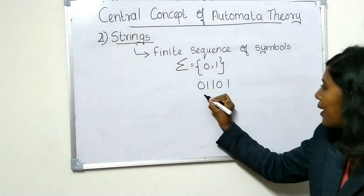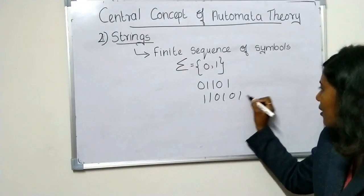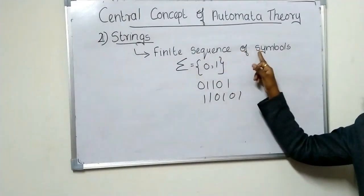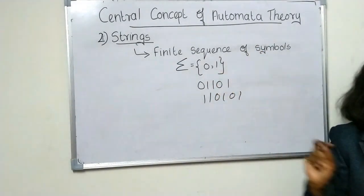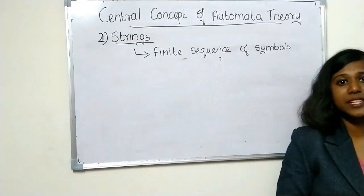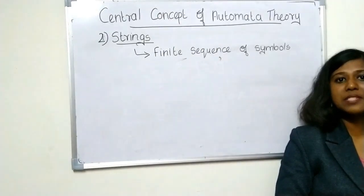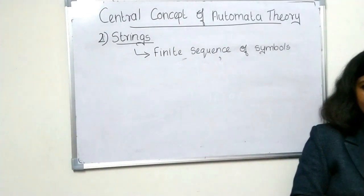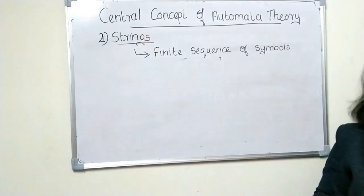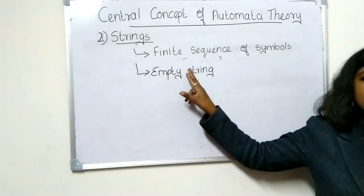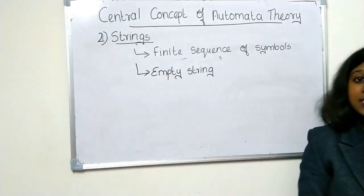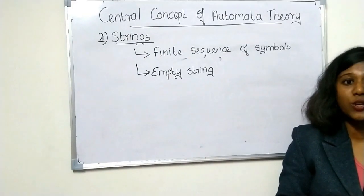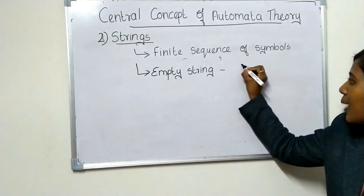For instance, writing '1,1' is also a String — a string is simply a sequence of symbols. Next is the Empty String. The Empty String is a string with 0 occurrences of any symbol, and it is denoted by the symbol Epsilon.